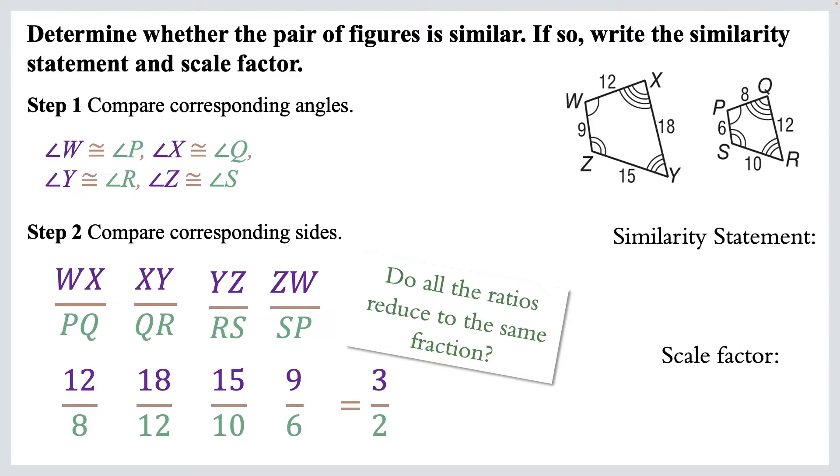And that fraction that they all reduce to, that's called the scale factor. So first we need to write a similarity statement. So we can say WXYZ is similar to PQRS, and its scale factor is 3/2. Now everything I've done here had the bigger one on top, and the smaller one on the right on the bottom. Everything actually could be turned upside down. And we could then also say that PQRS is similar to WXYZ. If we do that, we just have to also flip the scale factor to 2 over 3.